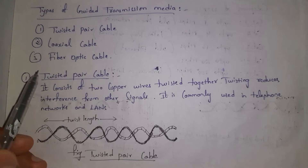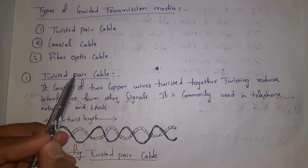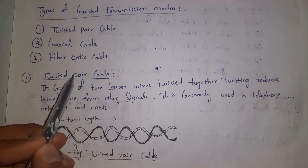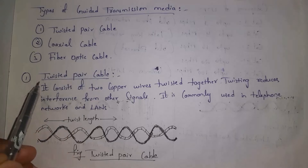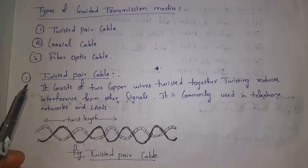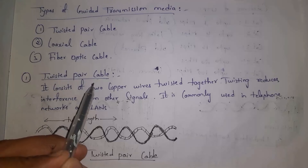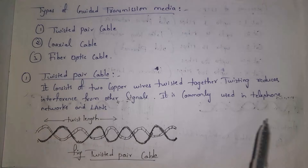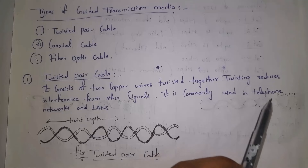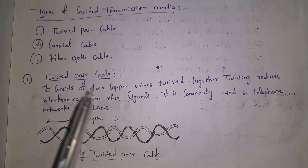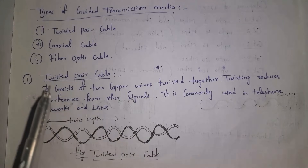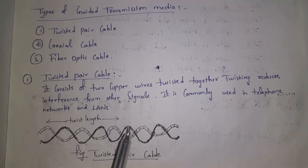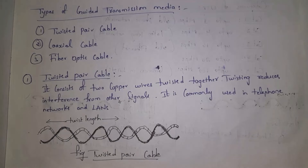The name itself says twisted pair cable — a pair is two wires, and twisting means combining two wires. So twisted pair cable contains two copper wires twisted together. Twisting reduces interference from other signals. We use twisted pair cables in telephone networks and LANs.